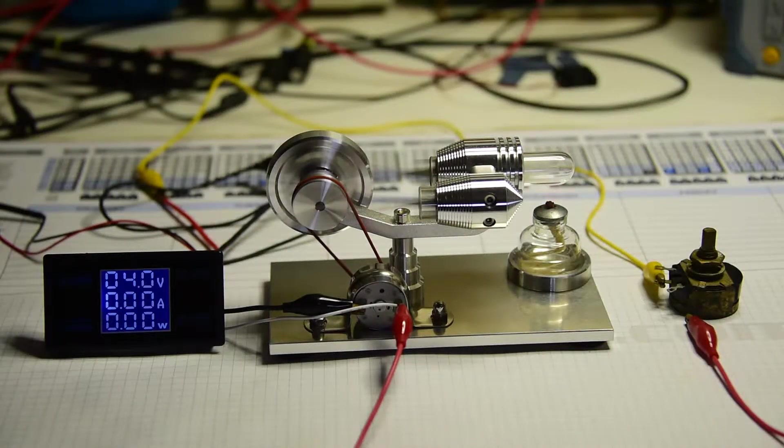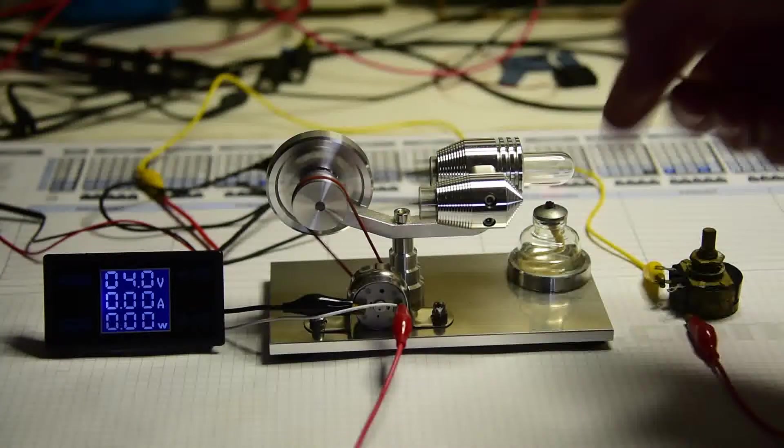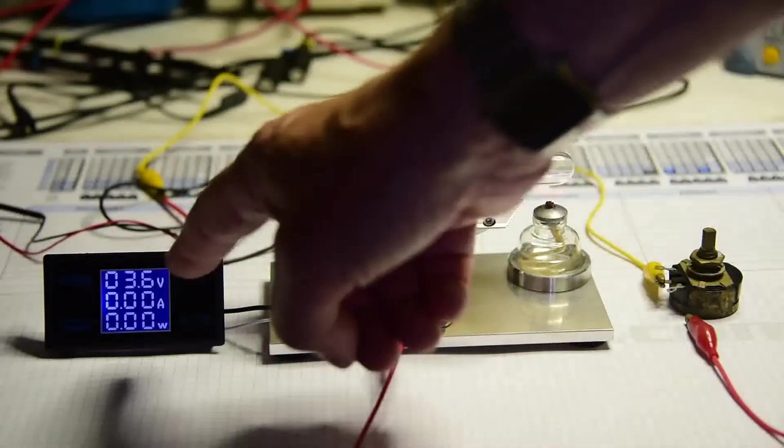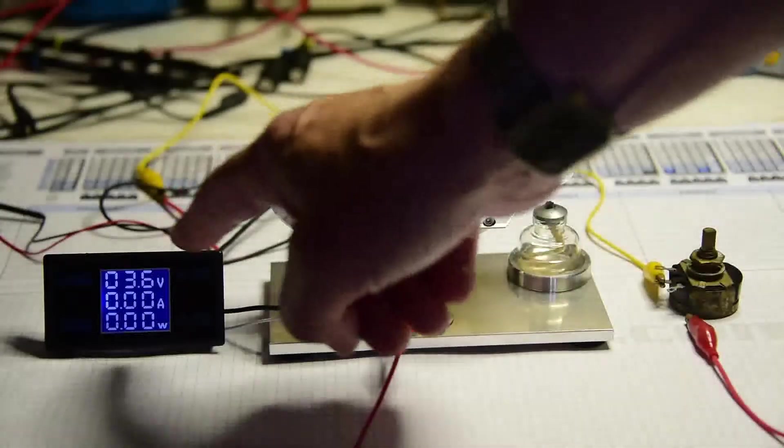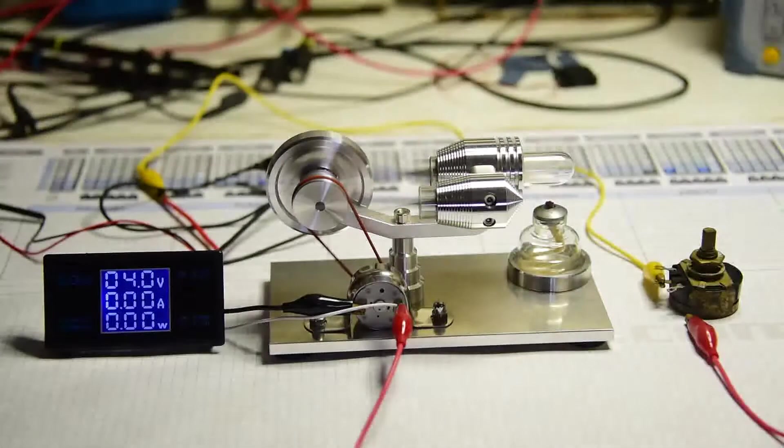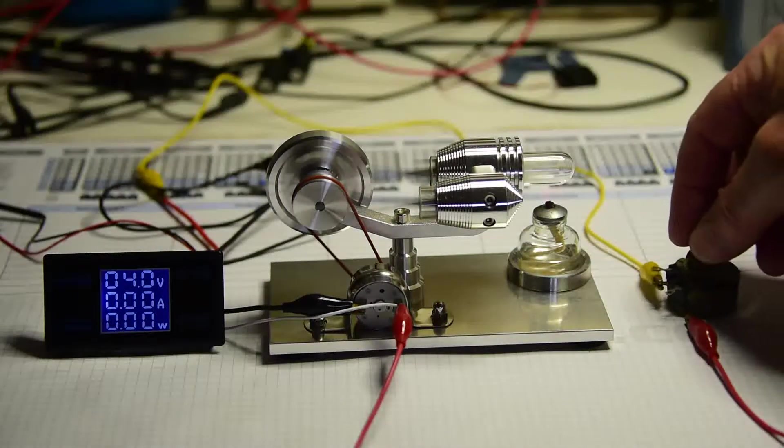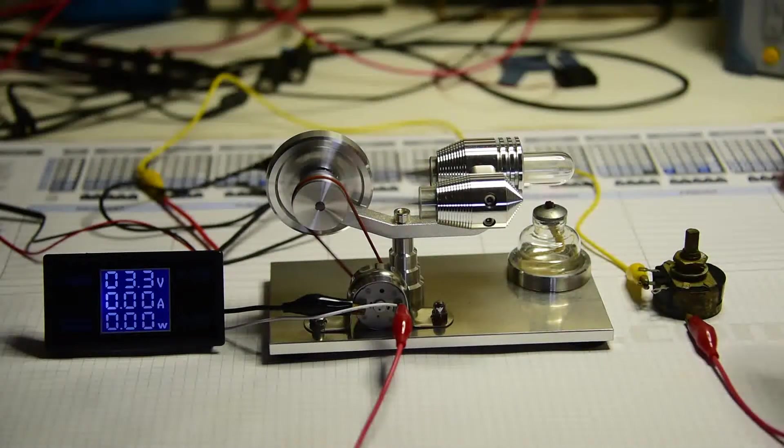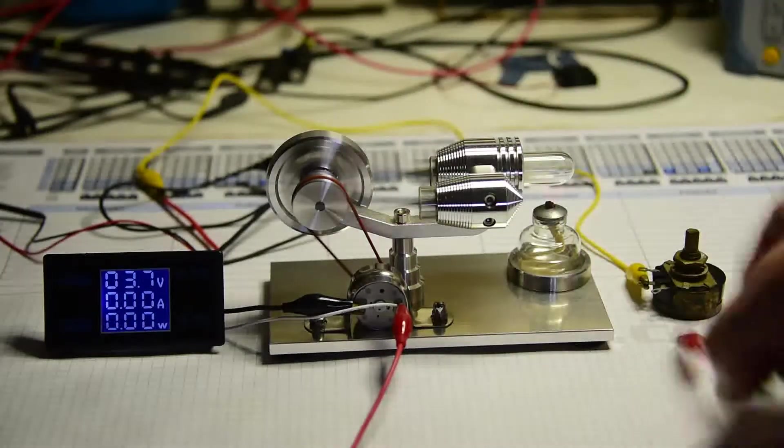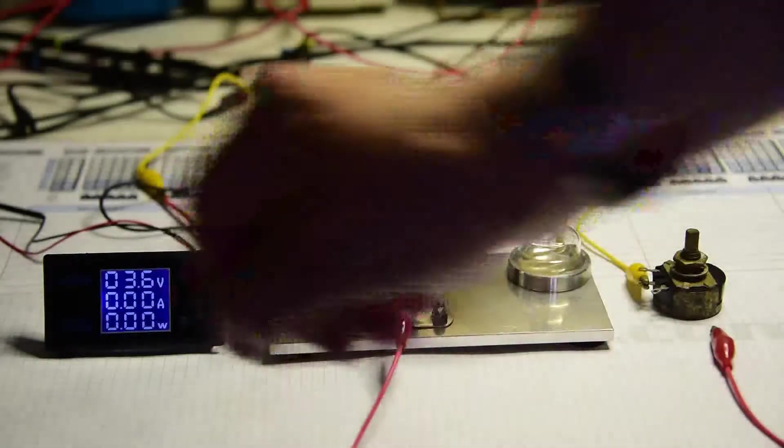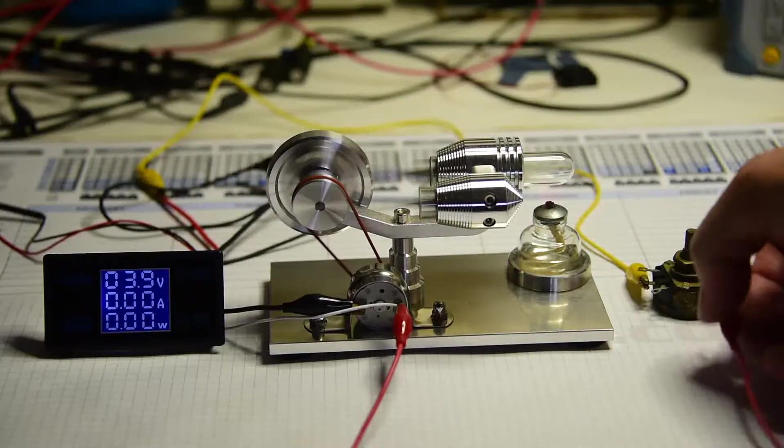Obviously I wasn't expecting very much, but here's my test setup: the Stirling engine with generator, a little DC power meter showing the volts, amps, and watts, and a 100-ohm potentiometer which will be the load on the generator. Once I connect this clip lead, that will provide some current and we can measure the power.